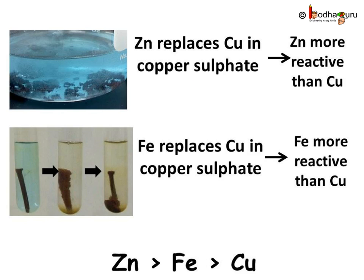So we can say zinc is more reactive than iron and copper, and iron is more reactive than copper but less reactive than zinc. Thus, in a displacement reaction, the more reactive metal replaces the less reactive metal in its compound. Zinc replaces copper in copper sulphate, and iron replaces copper in copper sulphate. Reactivity-wise: zinc is more reactive than iron, which is more reactive than copper. Among these three, zinc is the most reactive and copper is the least reactive.